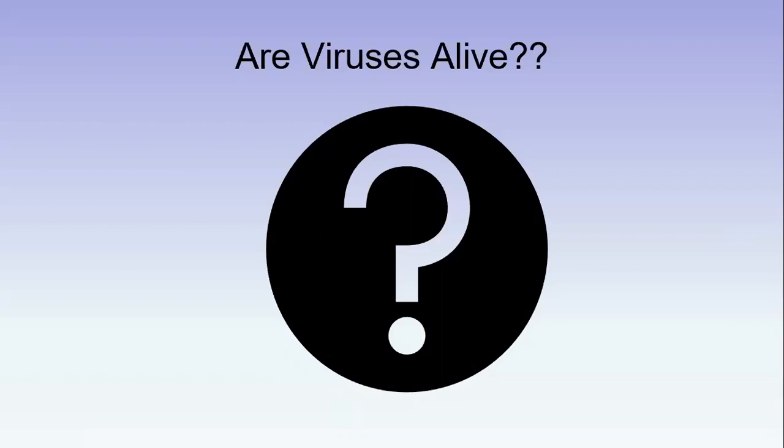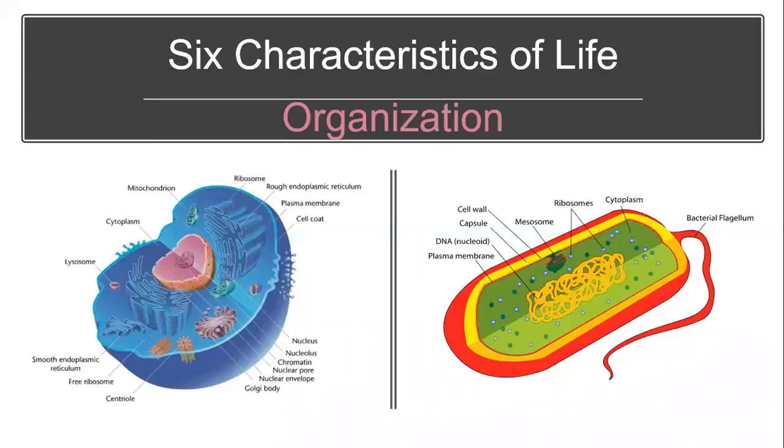There's been a question in biology for a long period of time, and that question is: are viruses alive? There are six characteristics that have to be met to say that a cell is alive. The first characteristic is that there must be organization.